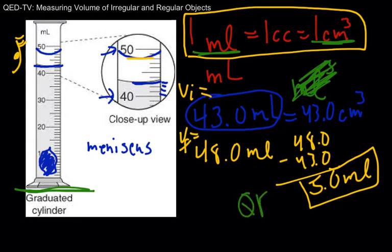And so we can figure out the volume of an irregular object by using a graduated cylinder and what we call water displacement. Hopefully that helps you figure out how to find the volumes of irregular and regular objects.